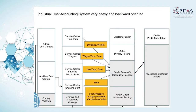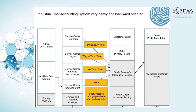We have an SAP system, and in this SAP system you see different layers. We have a very complex, very time-consuming value flow of our cost blocks over four different layers. So this is expensive, it is time-consuming, and it is not very easy to understand what is happening with the different cost blocks.